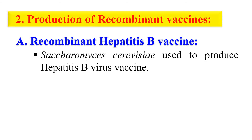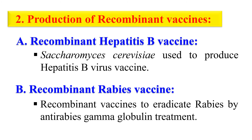The next application is the production of recombinant vaccines. Just as we can make recombinant proteins, we can also make recombinant vaccines using GEMS. For example, the recombinant hepatitis B vaccine — Saccharomyces cerevisiae, also known as baker's yeast, produces the hepatitis B virus vaccine based on the hepatitis B surface antigen, sold under the trade name Engerix B. Similarly, a recombinant rabies vaccine can also be developed against rabies disease.